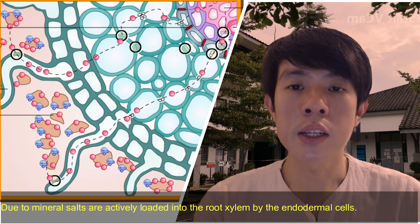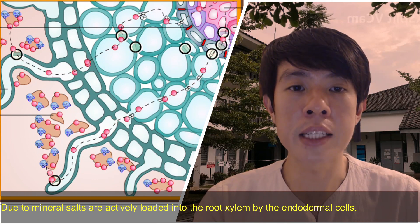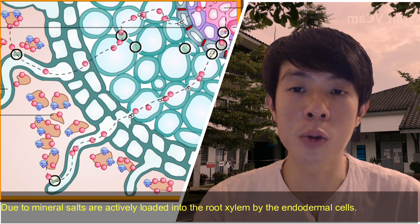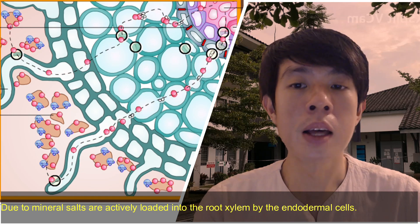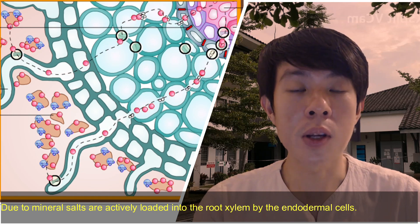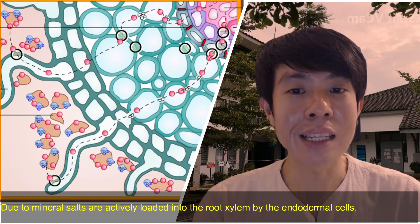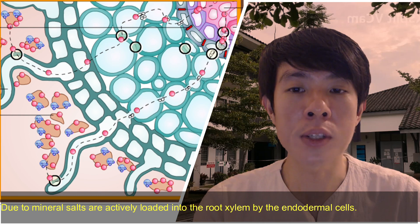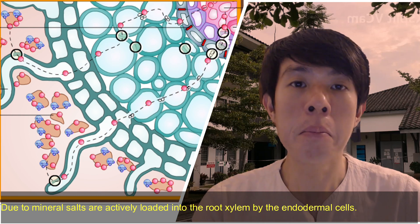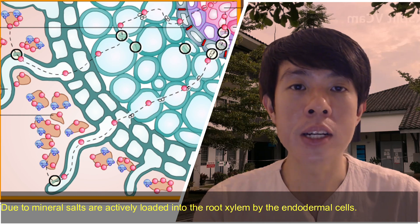Root pressure is due to the accumulation of mineral salts in the root xylem. Mineral salts are actively loaded into the root xylem by the endodermal cells.